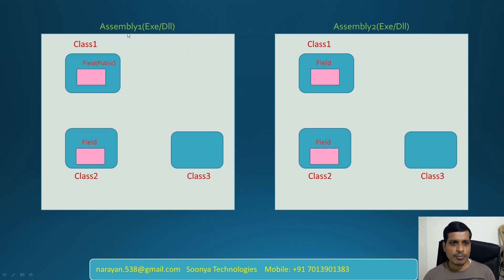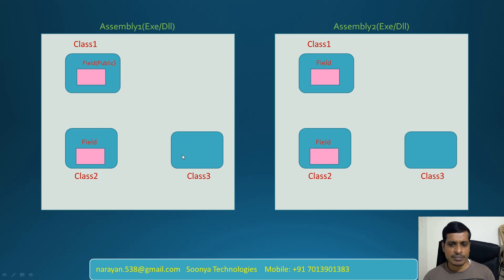For example, here we have Assembly 1 and Assembly 2. An assembly is in the form of exe or dll. Assembly 1 contains multiple classes like Class 1, Class 2, Class 3, and Assembly 2 contains Class 1, Class 2, Class 3. Here Class 1 contains one field declared as public. If we declare a field as public, then that field can be accessed within this class, other classes, other classes from other namespaces, or other classes from other assemblies. That means if we declare any member as public, we can access that member anywhere within the assembly or other assemblies — we don't have any restrictions for public members.